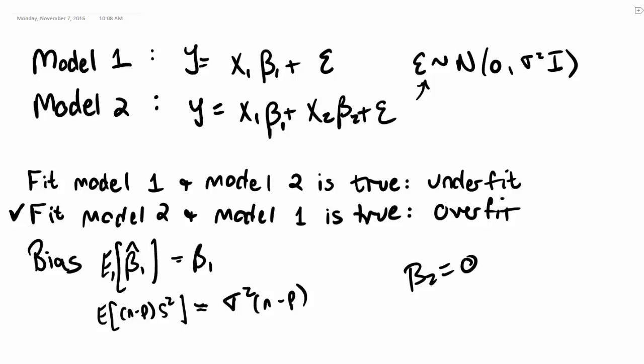Now let's go over some notation to remind ourselves we're talking about both fitted models that we have here, model 1 and model 2. We're talking about the overfit instance, the instance where we fit model 2 but model 1 is true.